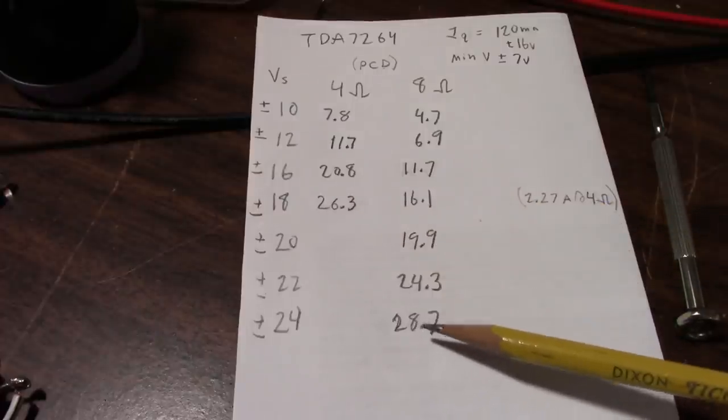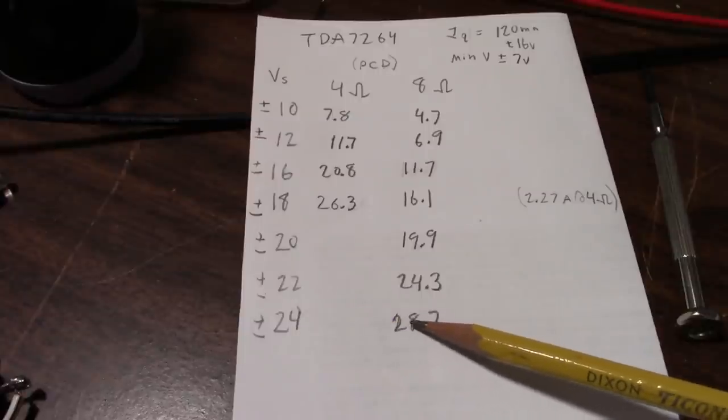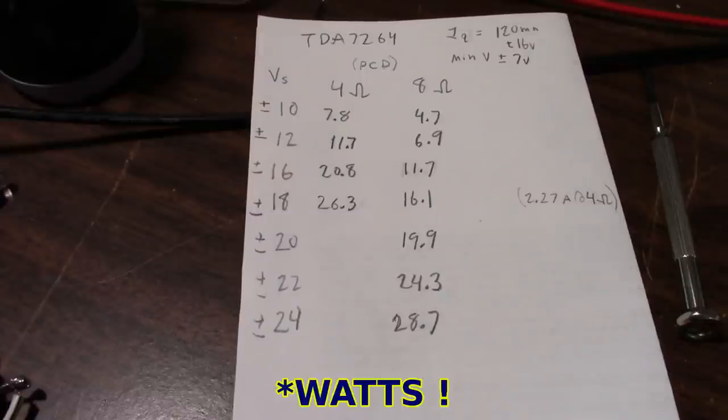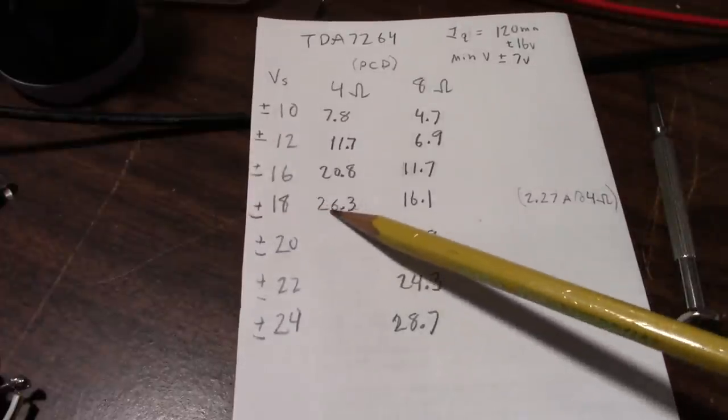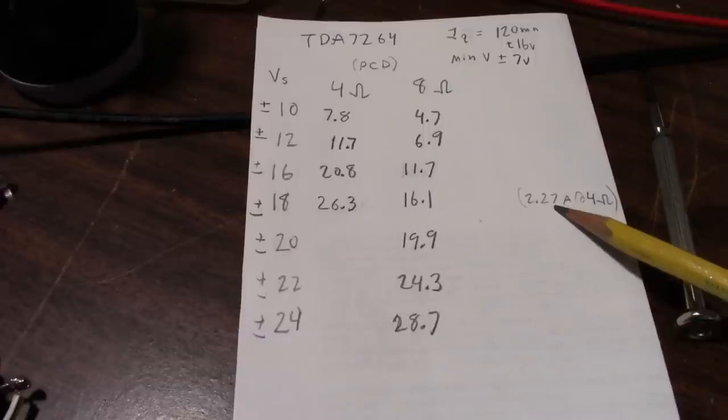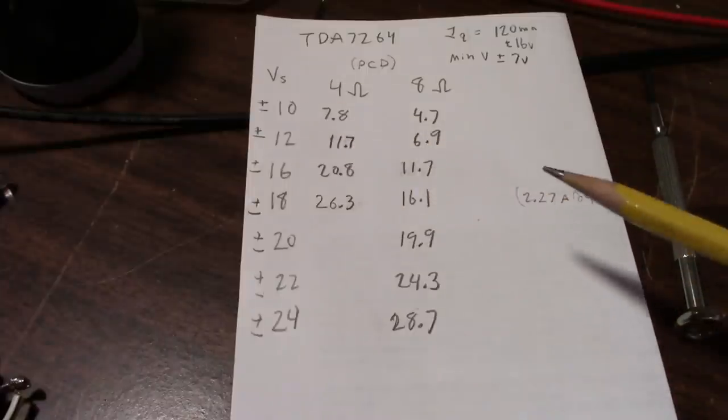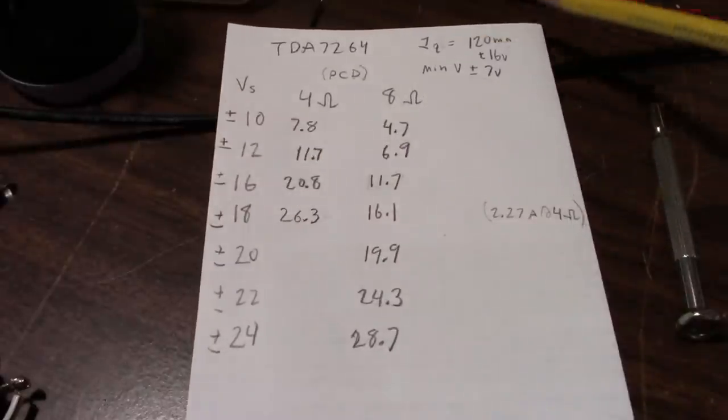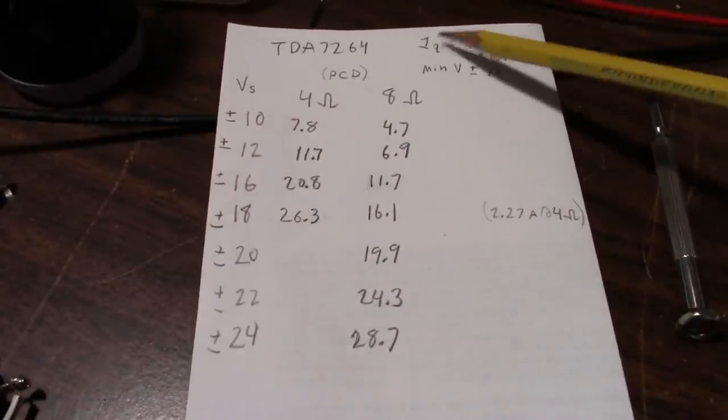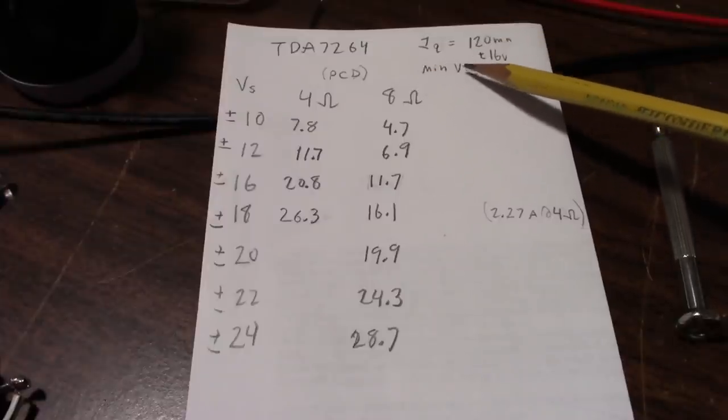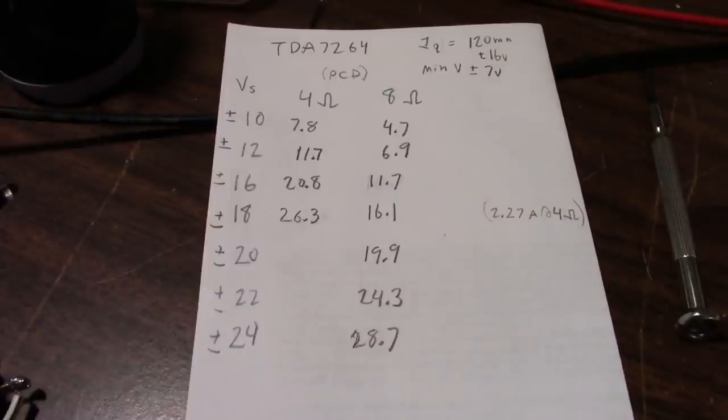And, of course, with 8 ohm loads, you can take it a lot higher because the current will be a lot less. And we nearly hit 29 volts. So that was pretty good. At 18 volts with the 4 ohm load, the amplifier was drawing 2.27 amps. But keep in mind that these are both channels driven with all these tests. Quiescent current with the amplifier warmed up at plus or minus 16 volts is 120 milliamps. The minimum operating voltage before the amplifier shut down was plus or minus 7 volts. So, a pretty neat little amp you might want to build.